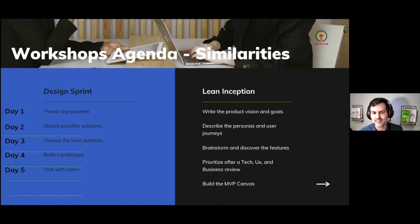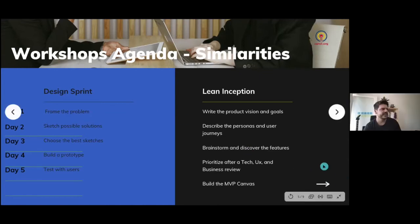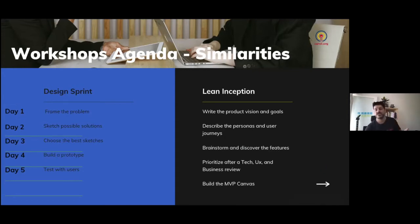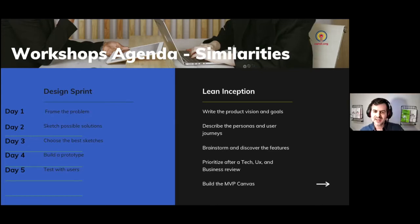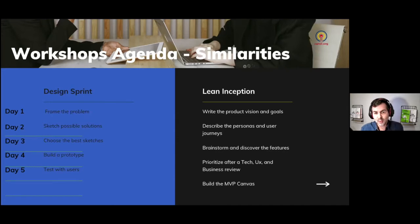In Design Sprint, day two is about sketching possible solutions — exploring and understanding a little more, including the context and the users. Similarly in Inception, you have Personas and Users. It's interesting because in Lean Inception there's no sketching — we don't think about the design and the product yet. But we do want to understand the needs of the users and their journeys, so we welcome people with that knowledge into the room and share current information about users and their journeys.